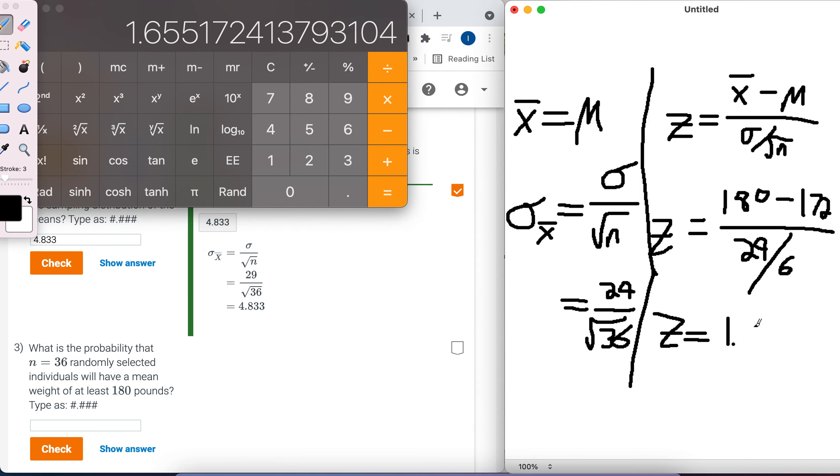So I got 1.66 when I round. Z-scores, usually we just do... Oh, they want three decimal places. So I'm going to do 1.655. That's not a probability, right? Because the probability is between 0 and 1. That is a z-score.